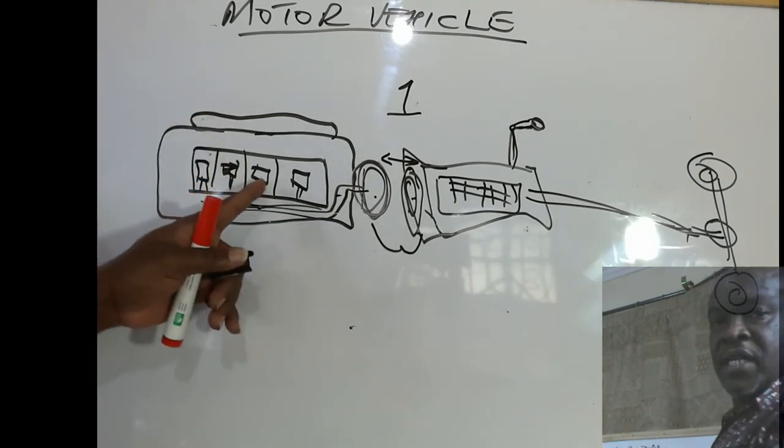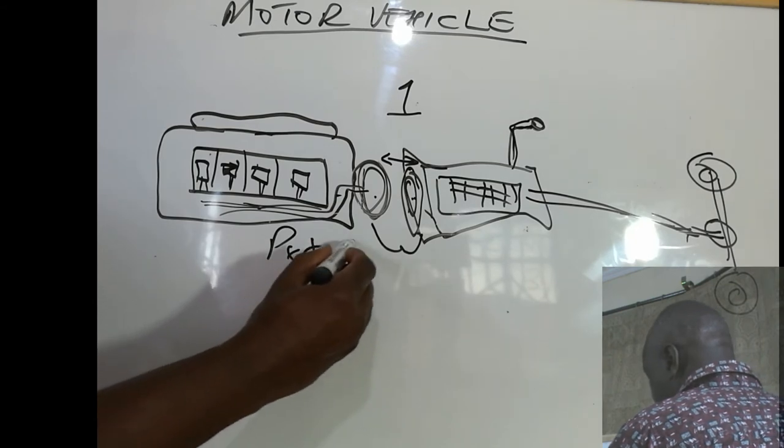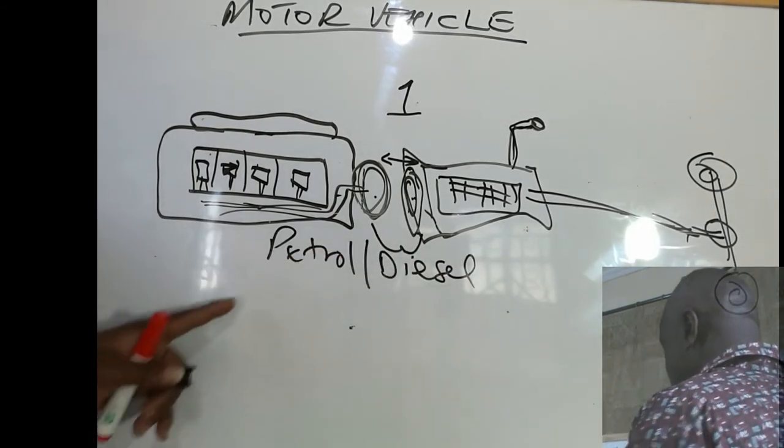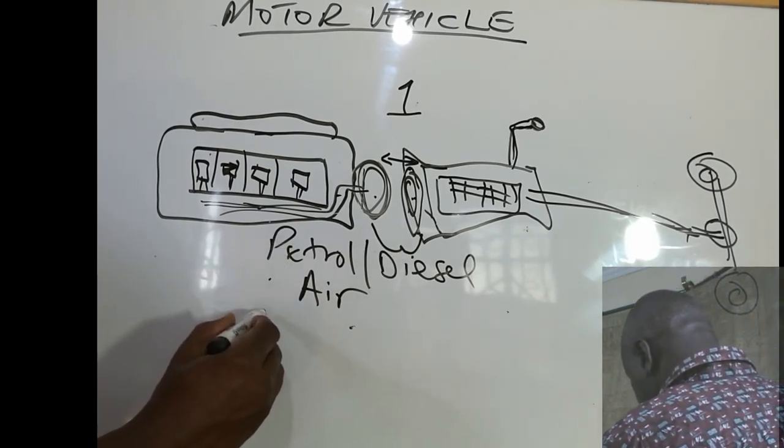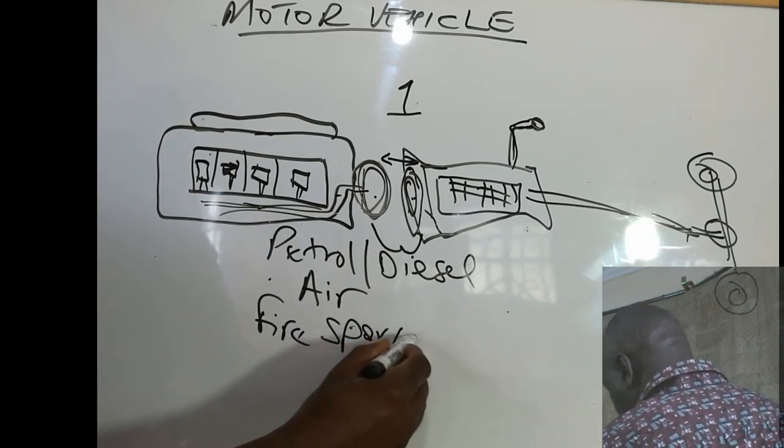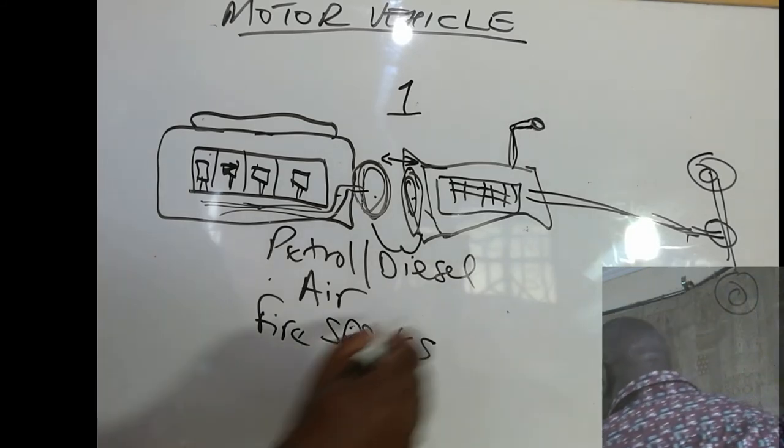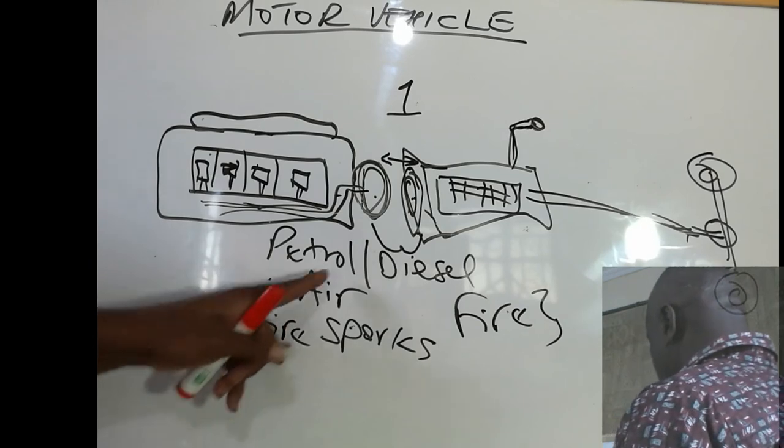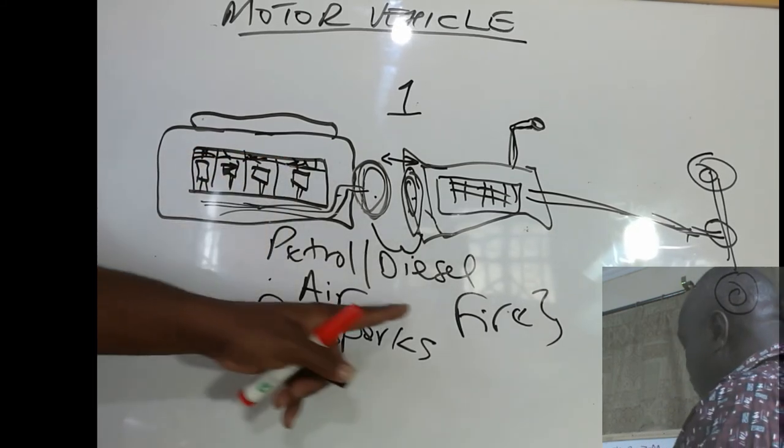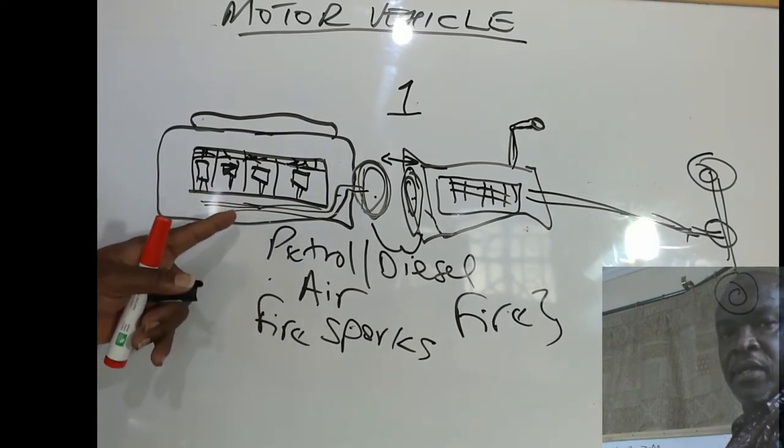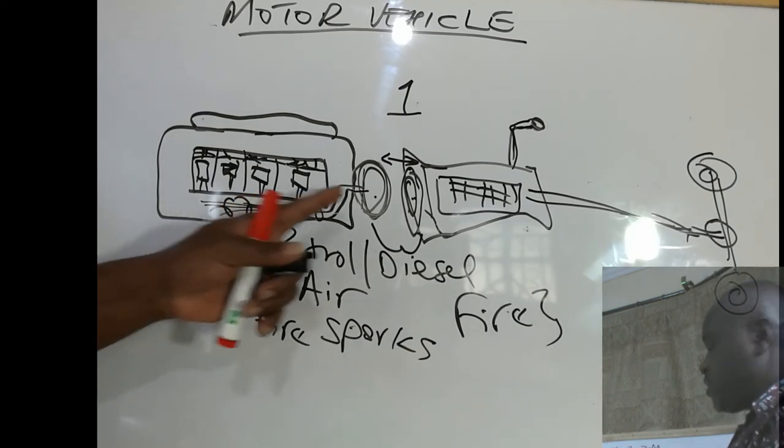Now, in order for this combustion to take place, there are several elements that are required. Number one, we need petrol or diesel. Number two, we need air. And number three, we need fire sparks. In order to ignite the petrol and air to produce fire. Now, this fire that is produced within the combustion chambers, which is above the pistons, it's the one that pushes the pistons downwards or upwards, thereby creating a continuous motion within the engine. And that motion rotates the flywheel.